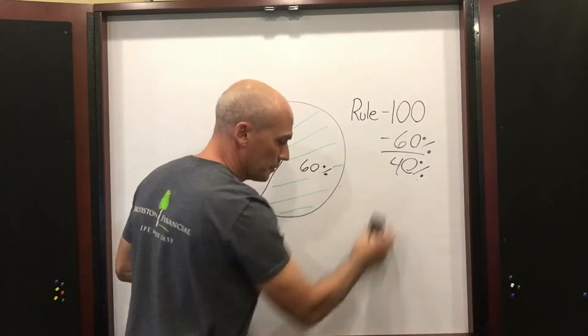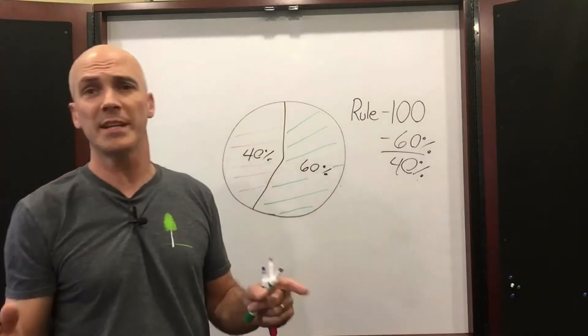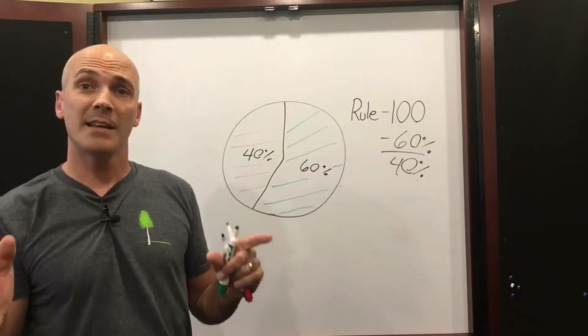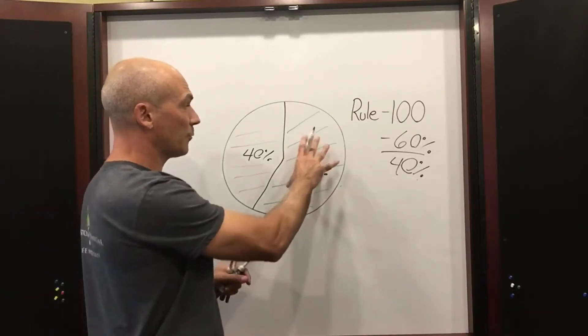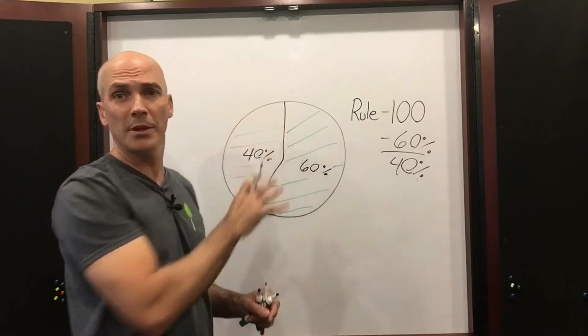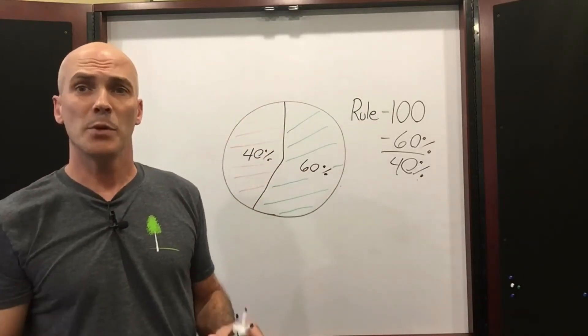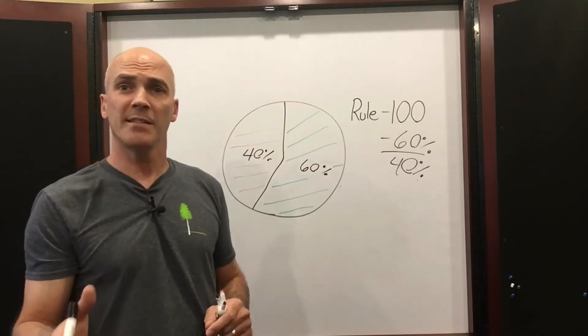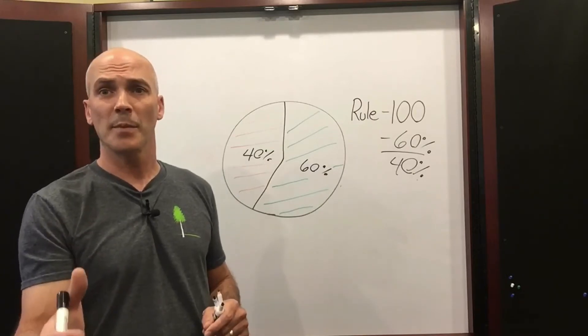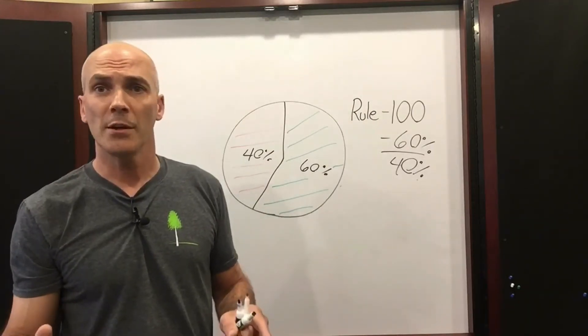Now, if it sounds too good to be true, it probably is. Here's one of the downsides of index products. Index products are not as liquid as traditional stocks, bonds, and even mutual funds. So typically, these companies will limit your access to the money at a rate of up to 10% per year.